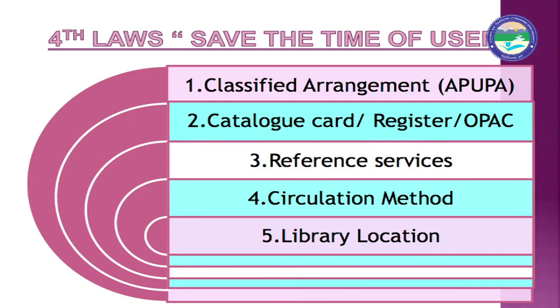Now let's talk about the fourth law: Save the time of the user — how to save the time of library users. First, let's talk about classified arrangements. We have discussed how to arrange books so that library staff can help users quickly. Dr. Ranganathan's pattern means books are arranged so one person can easily reach the required book.